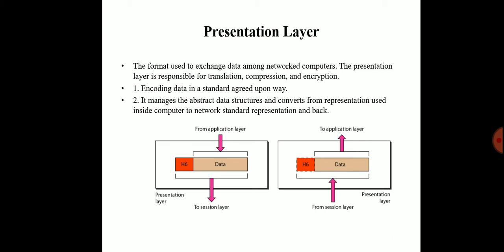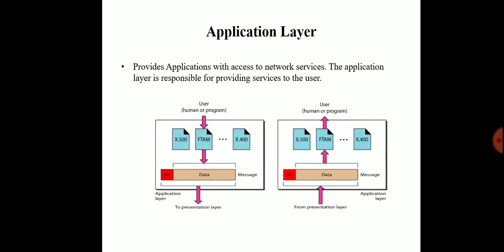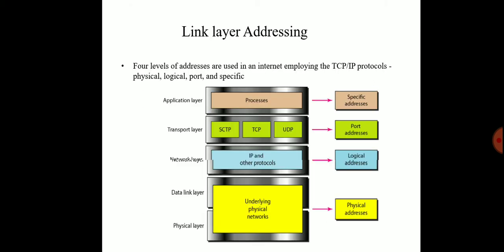Next is the application layer. The application layer is used to provide applications with access to network services. The application layer is responsible for providing services to the user. We see the human or program user in the layer using the presentation layer, and the data is forwarded to specific applications with access to the network service.